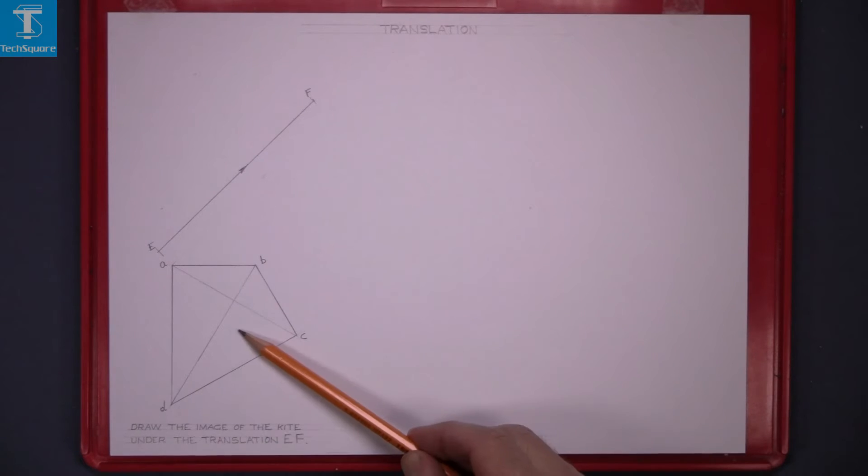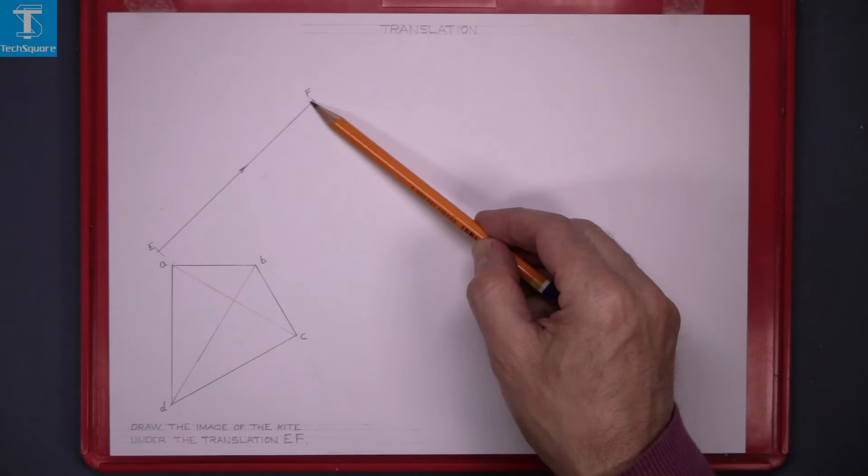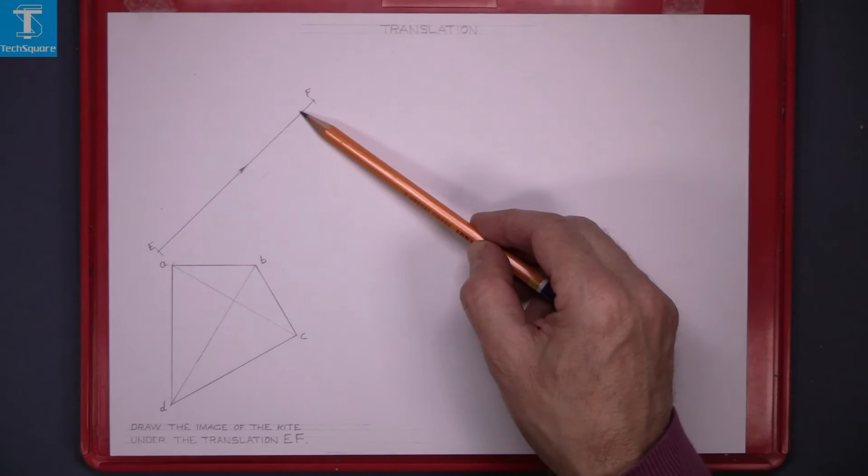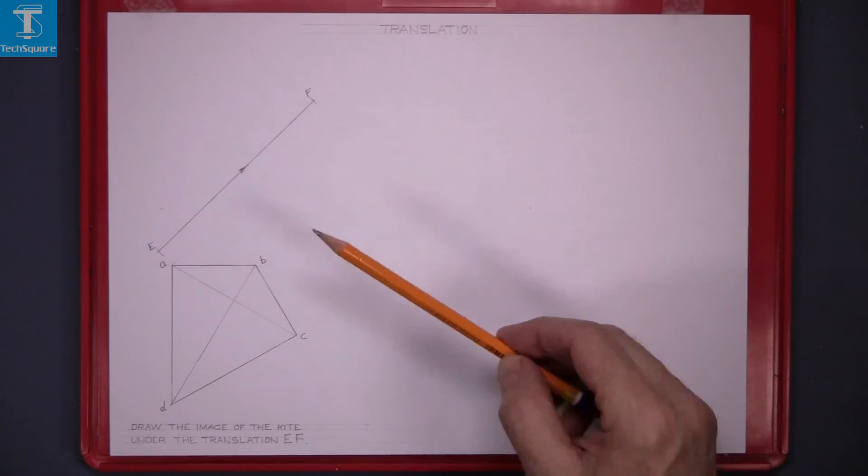This is the kite and this is the translation EF. So each point will move in the direction of EF and the same distance as EF.